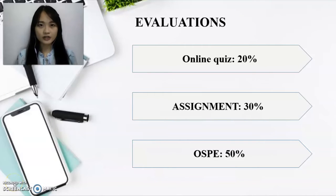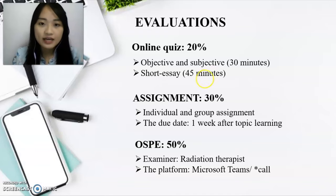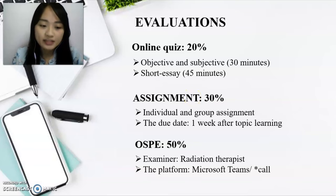Next, our student evaluation will be divided into three parts: the online quiz, assignment, and OSPI. The weightage for the online quiz is 20%, for the assignment is 30%, and for the OSPI is 50%. There will be two types of online quiz — one consisting of objective and subjective questions answered within 30 minutes, and the second will be a short essay question answered within 45 minutes. For the assignment, there will be individual and group assignments, all of which should be submitted approximately one week after learning the topic.